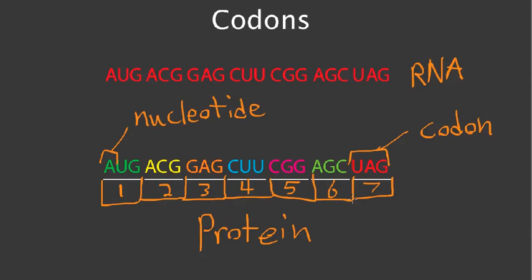And here, this is amino acid number 7. I'll put amino acid here so that you can remember that each codon codes for an amino acid.